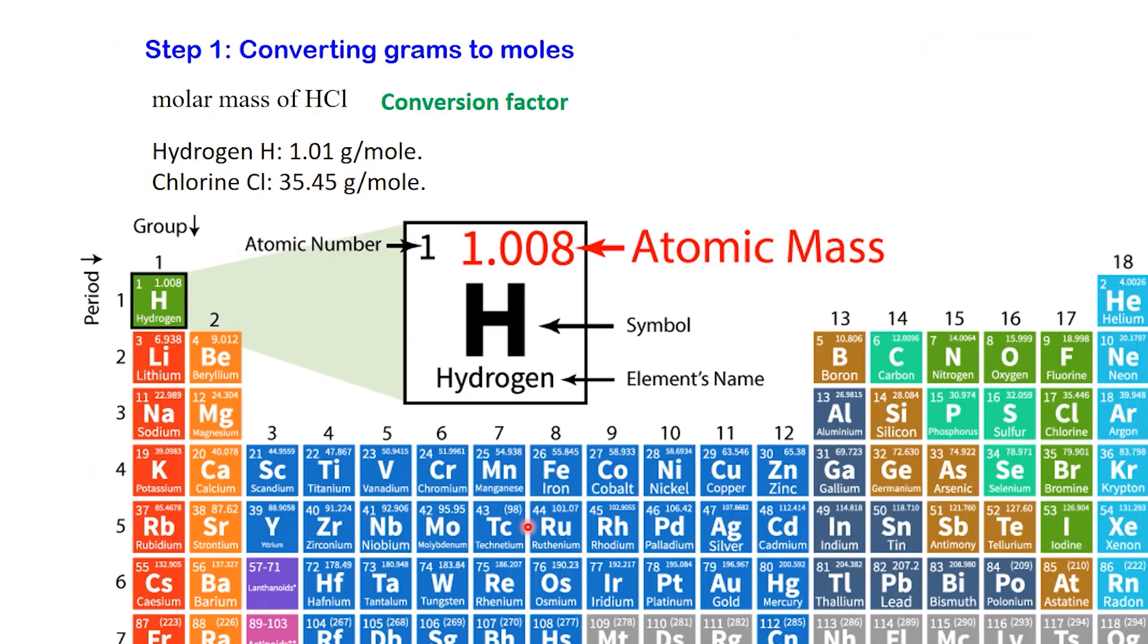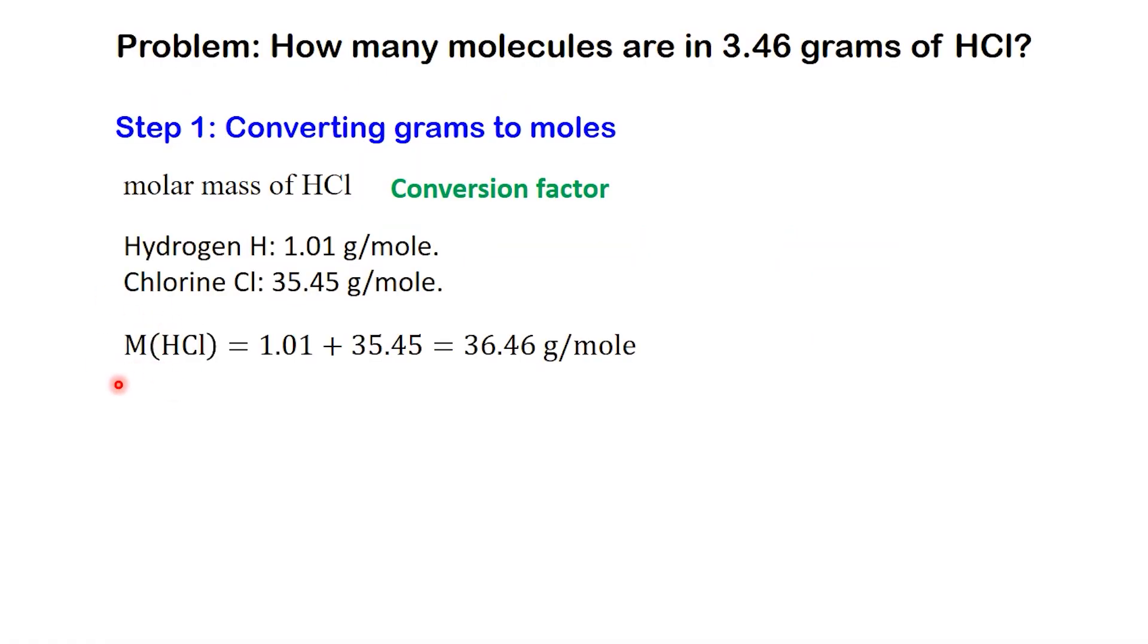So first, we go to the periodic table and look up the atomic masses. Hydrogen has a mass of about 1.01 grams per mole. Chlorine has a mass of about 35.45 grams per mole. To get the molar mass of HCl, we simply add them. 1.01 plus 35.45 equals 36.46 grams per mole. That means 1 mole of HCl equals 36.46 grams.